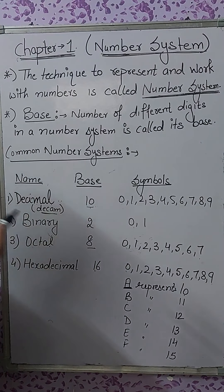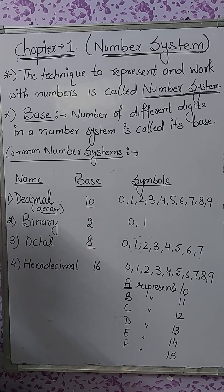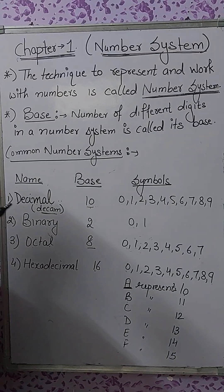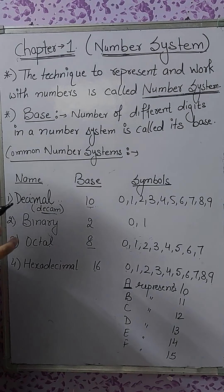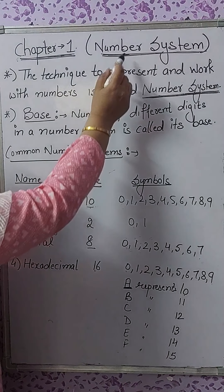You may think why we study this number system. In a computer, whatever you type — words or something — that is stored in the computer in the form of numbers. Even your drawings, your audios and videos are also translated into numbers and then stored in the computer. The computer can translate numbers and store numbers. That is why we have to study the number system.